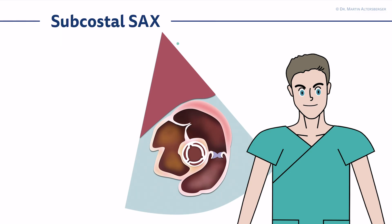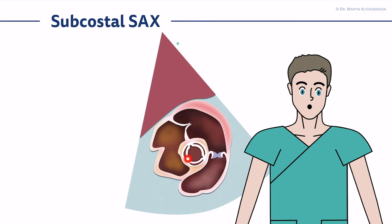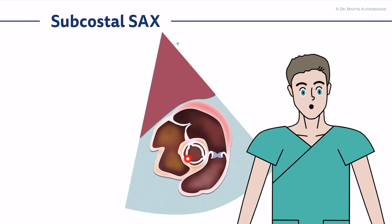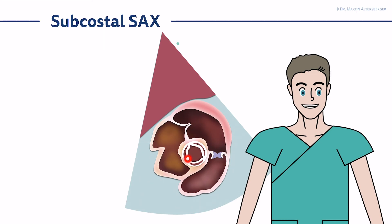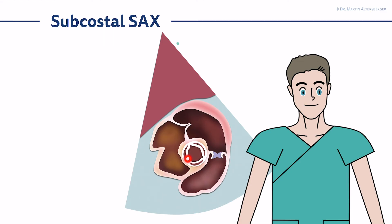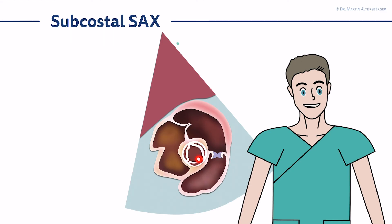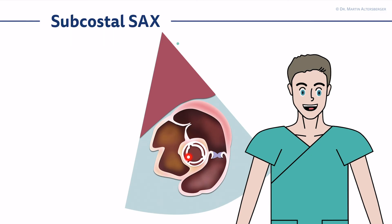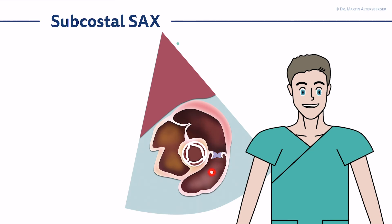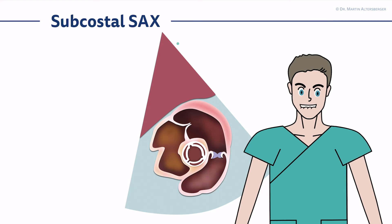There are some more views to cover. The subcostal short axis view is something you do not want to miss. From the subcostal four-chamber view, you simply rotate counterclockwise so that the marker of the transducer points towards the left shoulder of the patient. If you are in the right imaging plane, you get a subcostal short axis view. This looks similar to the parasternal short axis, just performed from a subcostal approach. You can see the tricuspid valve, the right ventricle RVOT, pulmonic valve, pulmonic trunk, and even the pulmonary arteries.